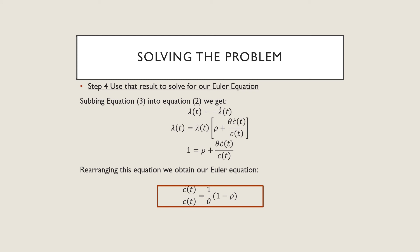Step number four is using this result for our Euler equation. We're going to substitute 3 into 2, and we're going to have that lambda t equals minus lambda dot t. Plugging that in and rearranging, we get our Euler equation, which is c dot t over c t equals 1 over theta times 1 minus rho. This is our Euler equation.